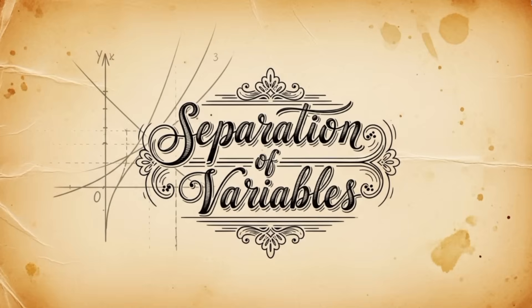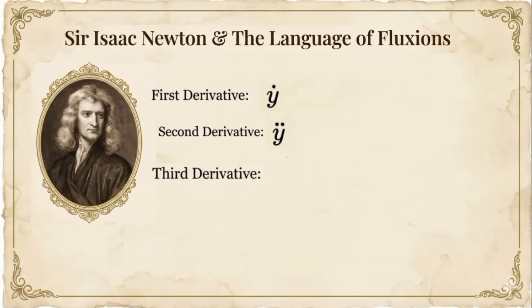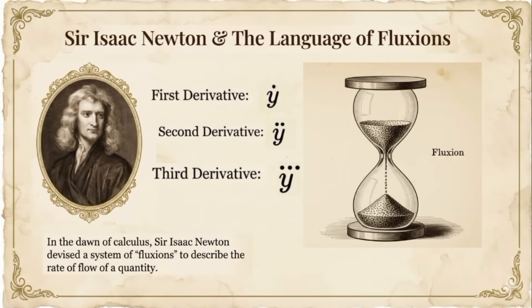In the early days of calculus, Sir Isaac Newton had his own way of writing derivatives — he used a dot notation. The first derivative was written as y with one dot above it, the second derivative had two dots above y, and the third derivative had three dots above y. This looks elegant at first glance: concise, clean, mathematical. Newton even insisted on calling derivatives 'fluxions,' the rate of flow of a quantity.